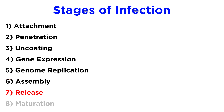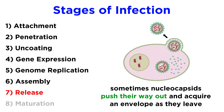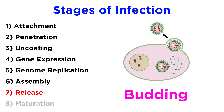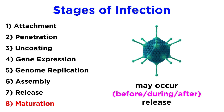Second to last, we've got release. For some viruses, release takes the form of lysis, in which viruses accumulate in the cell and the cell bursts. For others, the nucleocapsids of enveloped viruses push out through the lipid bilayer of the cell, acquiring an envelope on the way out. This process is called budding. The final step is maturation, which refers to the changes in the virion required to make it infectious. Note that not all viruses have this step, and that maturation might occur before, during, or after release.